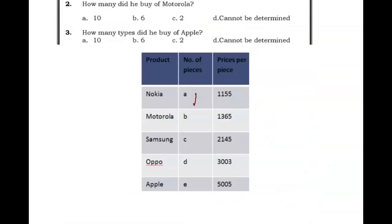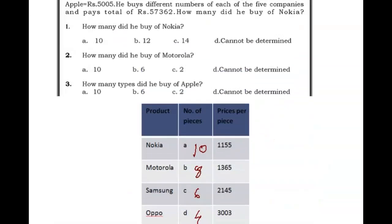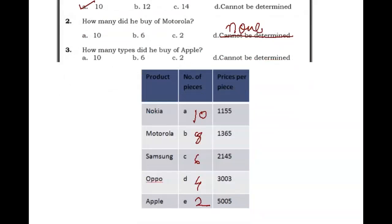So all values are: a = 10, b = 8, c = 6, d = 4, and e = 2. The set is now solved. The question asks: how many Nokia mobiles did he buy? Nokia is variable a, so the answer is 10. How many Motorola did he buy? The answer is 8 — or none of the above depending on the options. How many Apple mobiles did he buy? Apple is variable e, so the answer is 2.